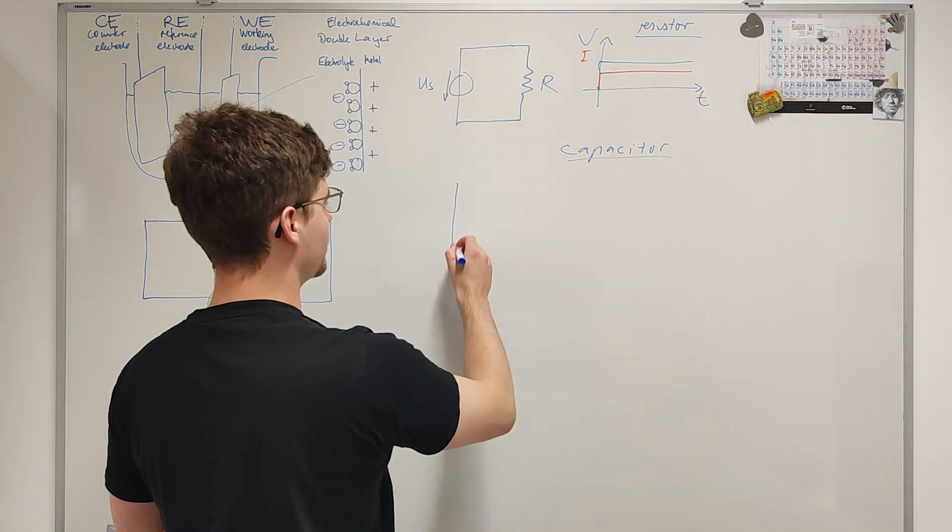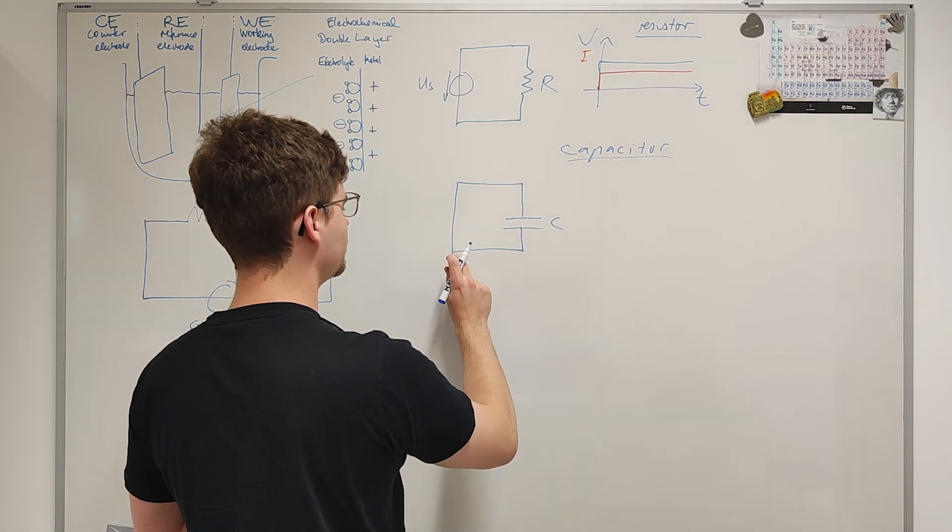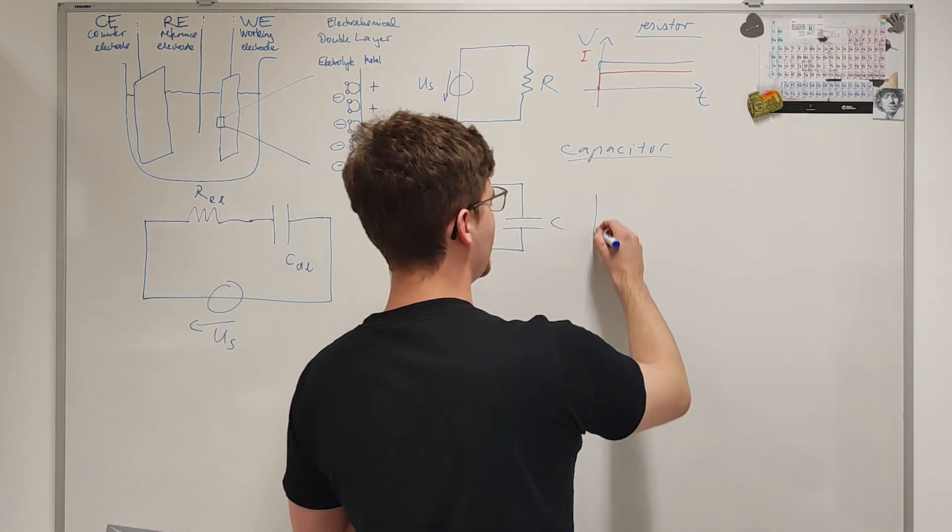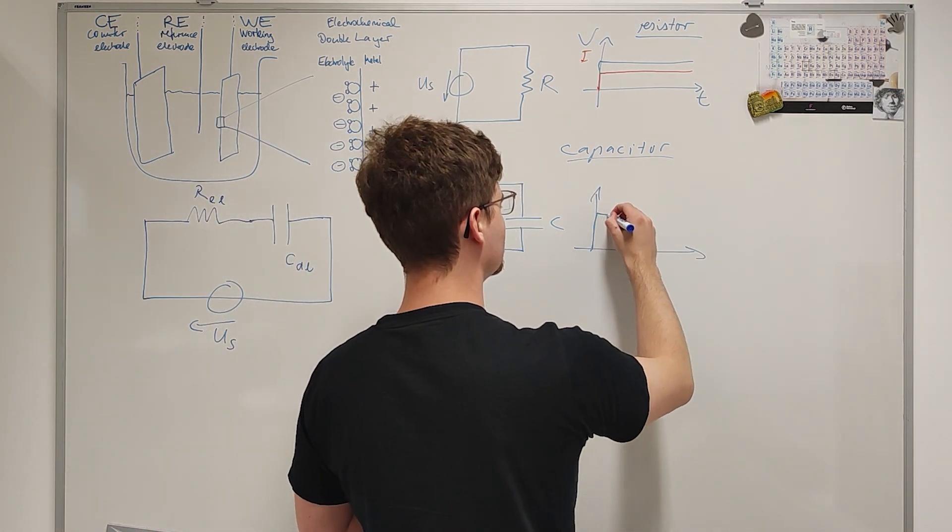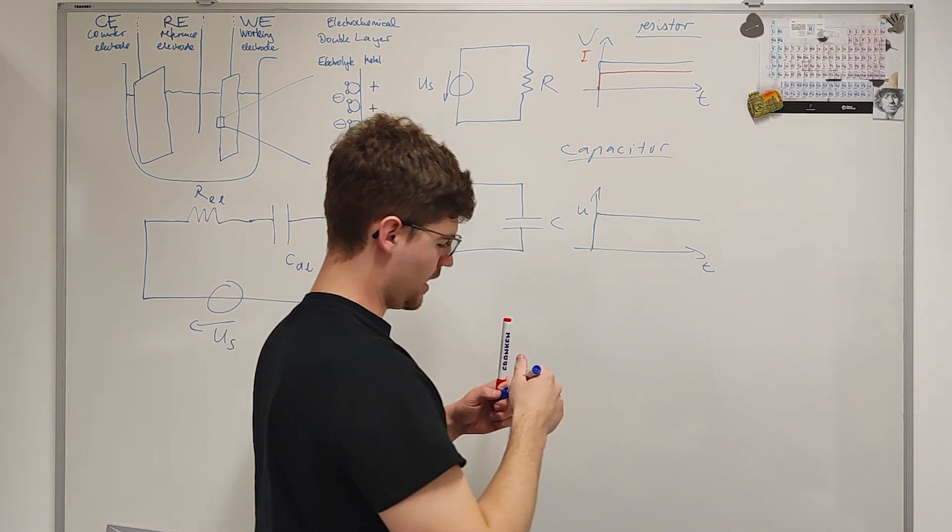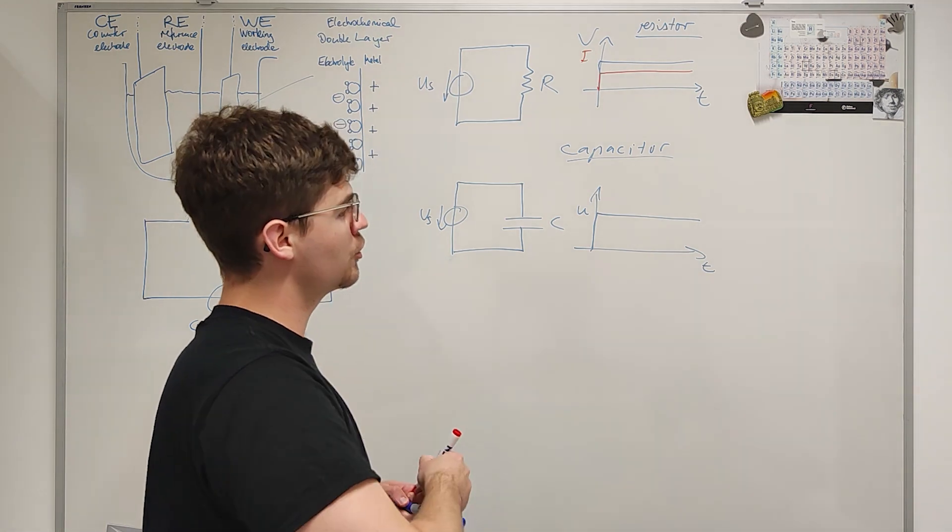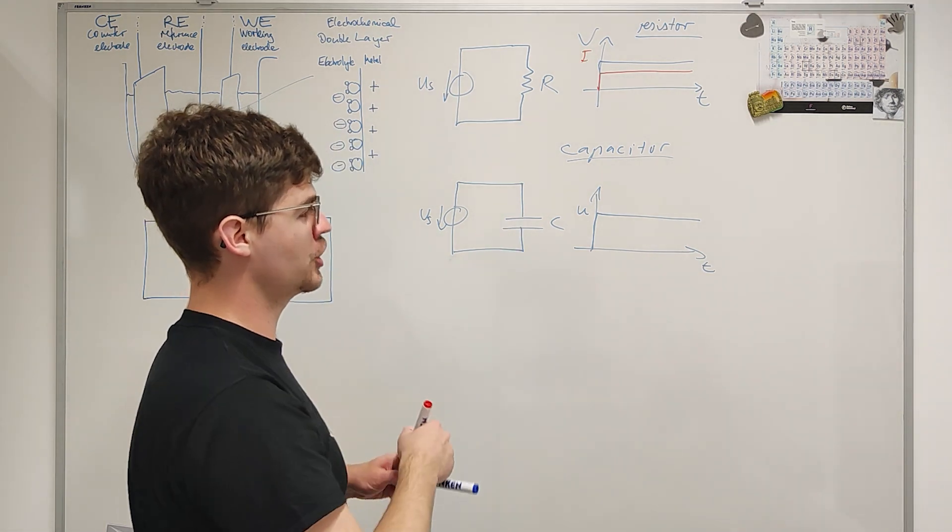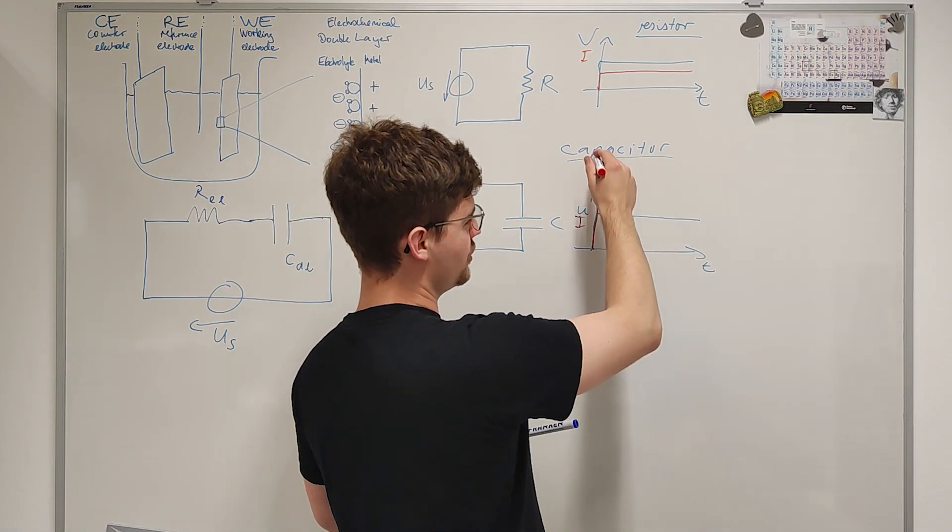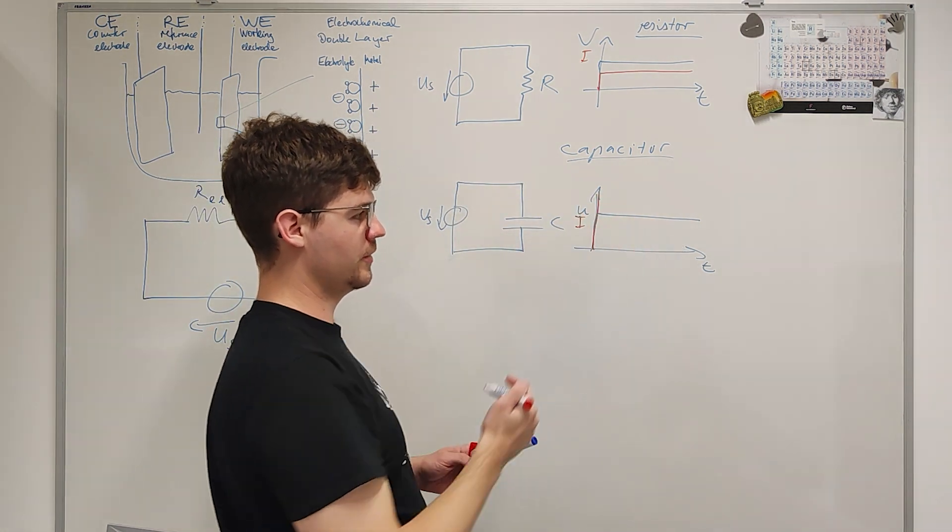If we apply this same voltage step to a capacitor, then we have a circuit like this. And the current response is an infinitely large current spike that transfers all the charges necessary to charge the capacitor onto the capacitor. Imagine this infinitely high. And then after the initial charging, no current flows.